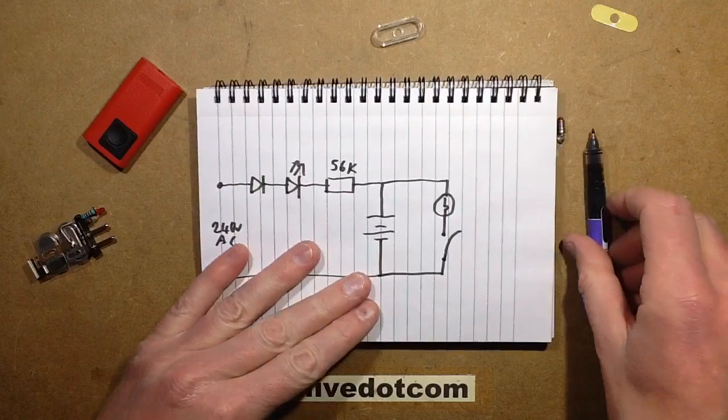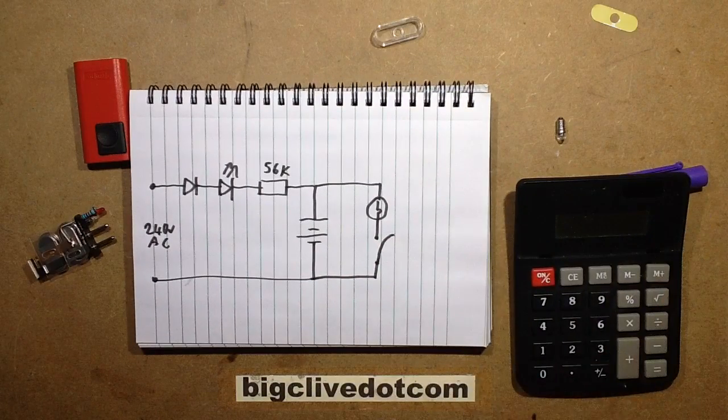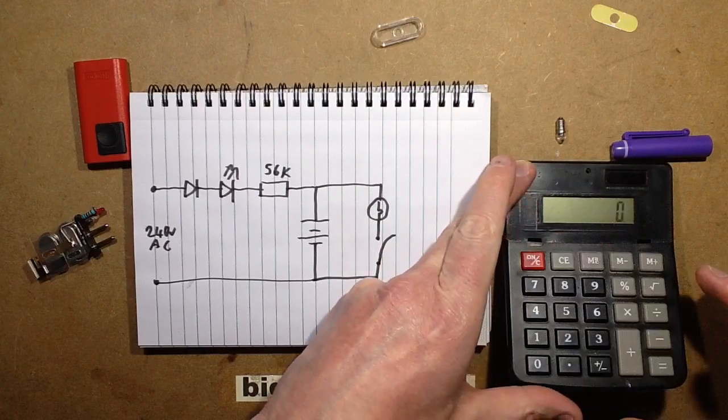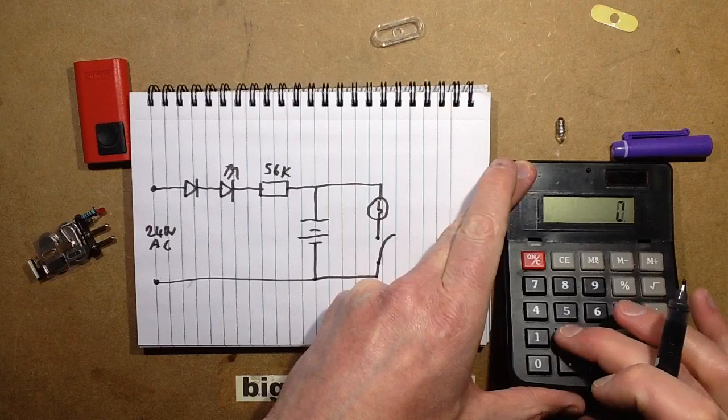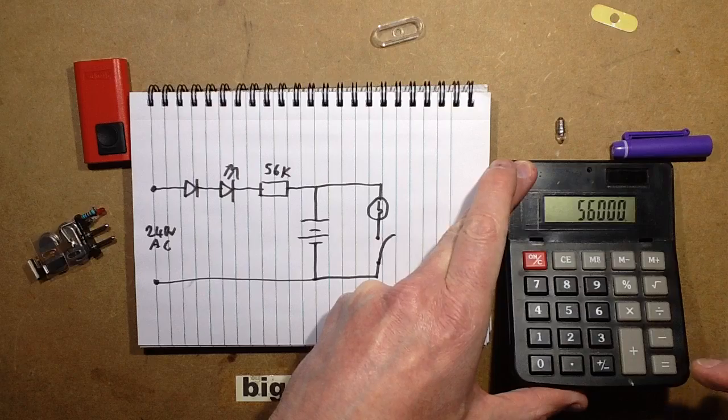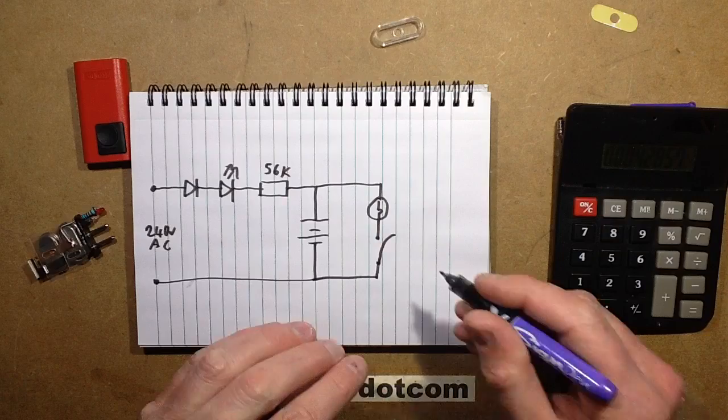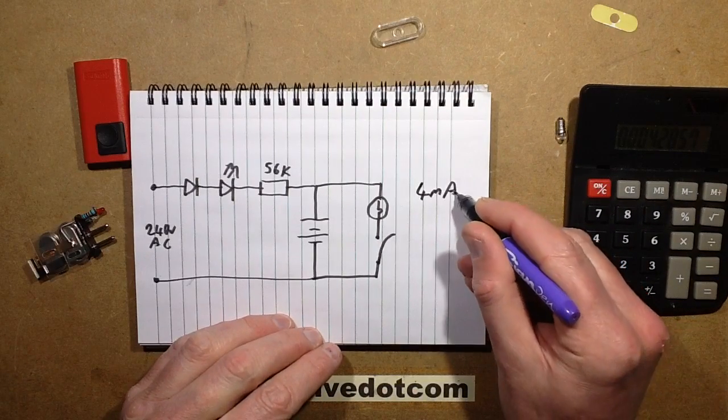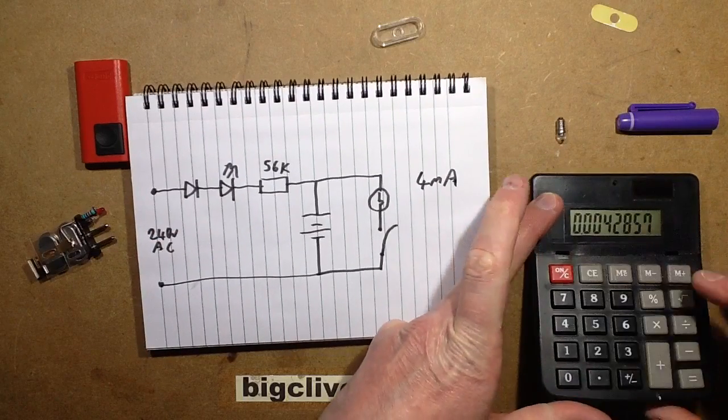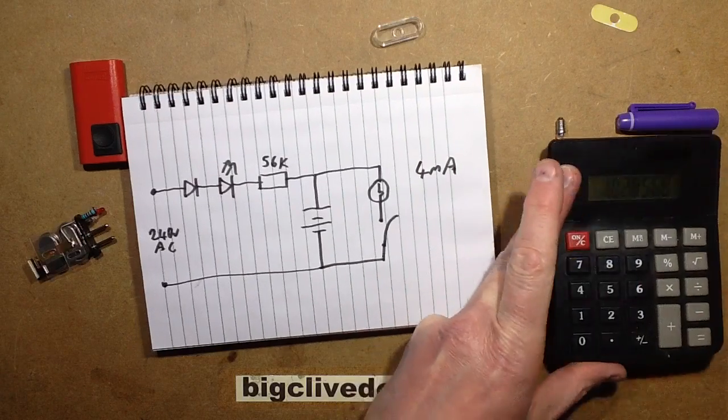Let's do the maths. So 56k - the current, keep in mind it's going to be half wave, we'll work that out afterwards. The current is going to be I equals V over R, so that's going to be 240 volts RMS divided by 56k. So that's going to equal roughly say 4 milliamps. But it's actually going to be half that because it's only active for half the time.